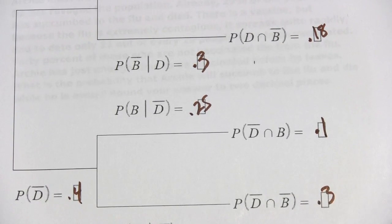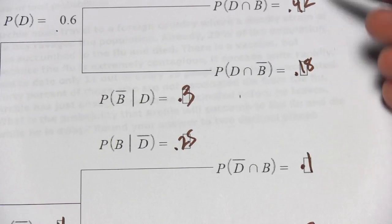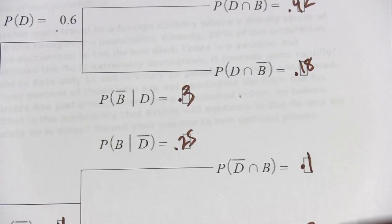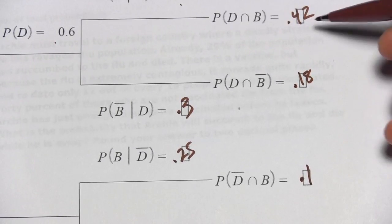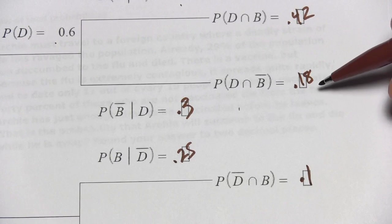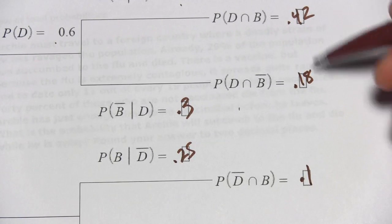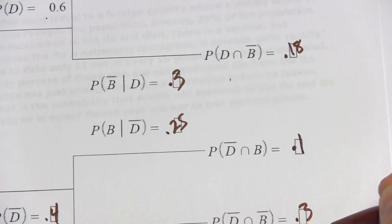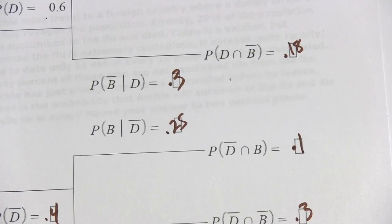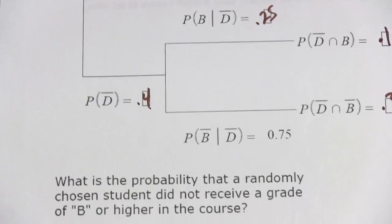If we've done all this correctly, these four intersection probabilities should all add up to 1. So 0.42 plus 0.18 is 0.6, plus 0.1 is 0.7, plus 0.3 is 1.0. We've filled out the tree correctly.